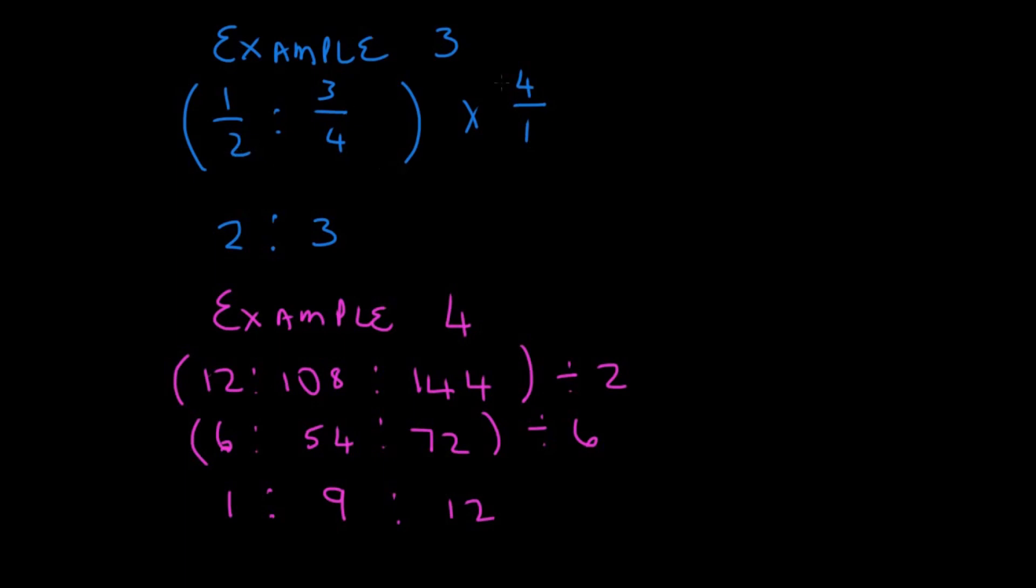What did I do to 2 to get 4? I multiplied by 2. So, I must multiply my numerator by 2 as well. That gives me 2. And then, what did I do to 4 to get 4? I multiplied by 1. So, I multiplied 3 by 1 as well. This gives me 3. 2 as to 3 is in its simplest form. So, that is our answer.